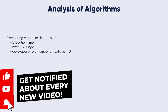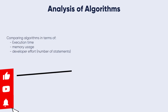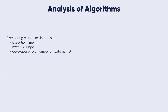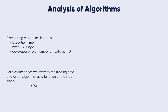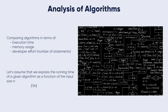Now, the analysis of algorithms involves comparing algorithms in terms of execution time, memory usage, and developer effort. To compare algorithms, let us define a few objective measures. Execution time is not a good measure, as execution times are specific to a particular computer.